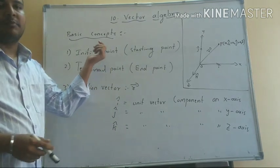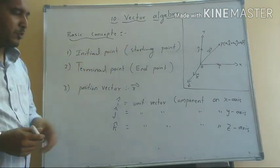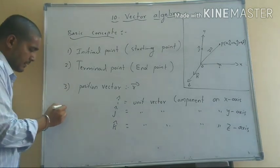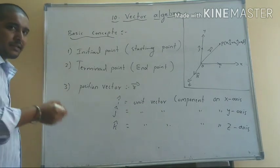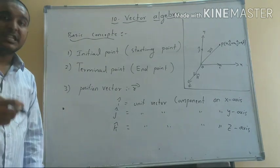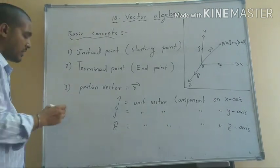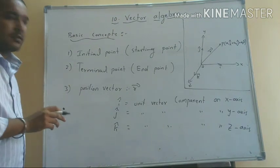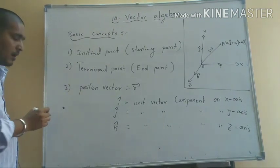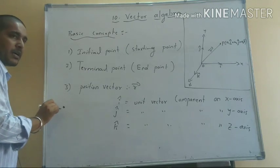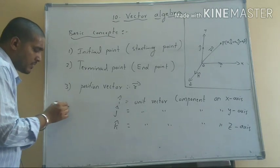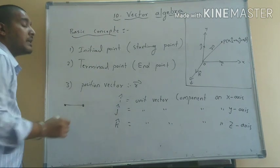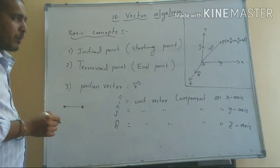First one: initial point, also called the starting point. Next one: terminal point. The starting point is where motion begins — that is the starting point, time 0. Motion gives the direction. The stop point is the terminal point, also called the end point.